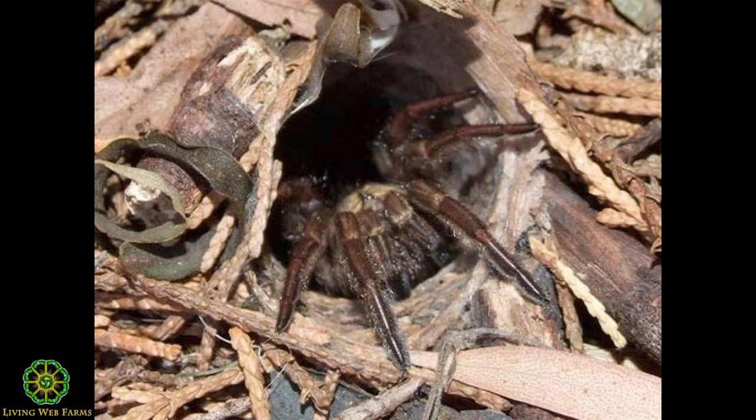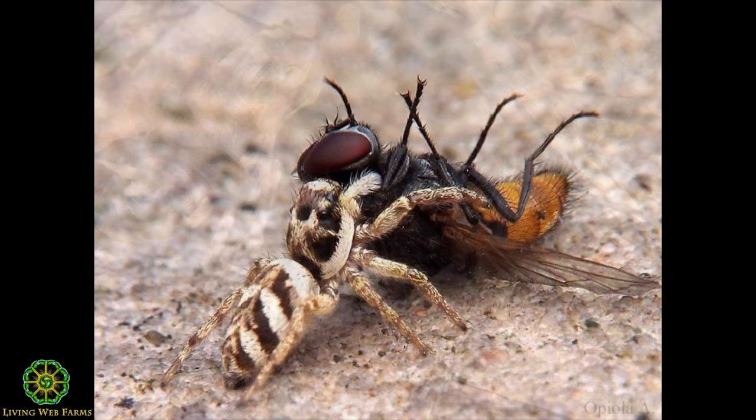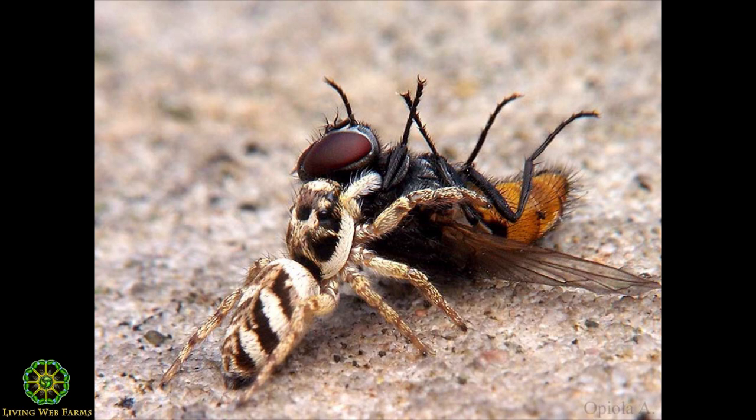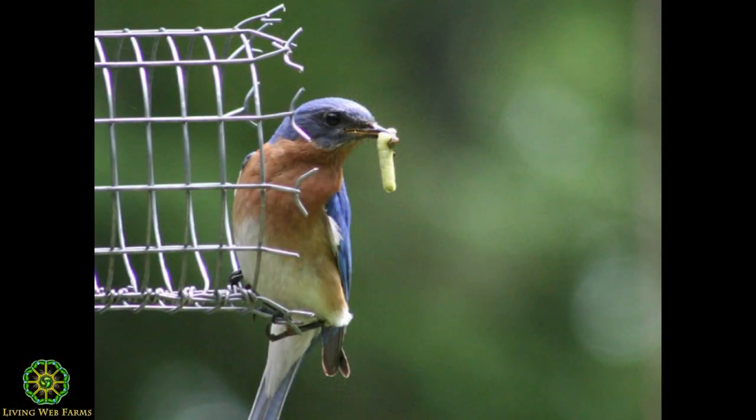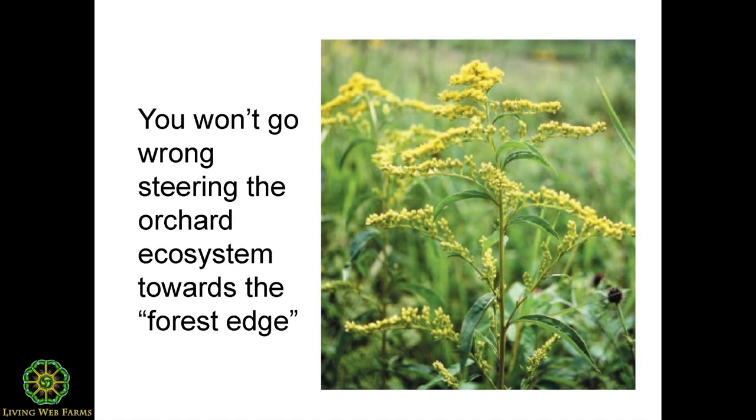Spiders are so amazing. Supposedly, wherever we are, within three feet of us there's a spider — spiders are ubiquitous and take care of so many things. When talking about plum curculio and apple maggot fly — species that pupate in the soil — there's a moment where larvae have to crawl into the soil. The more spiders you have, the more spider habitat you create as part of the biodiversity picture. Birds and bats are another big part of it. Goldenrod is a great spider plant — it provides spider habitat. So we're back to steering things toward the forest edge, not just nutritionally or fungally, but because it's part of the biodiverse picture.